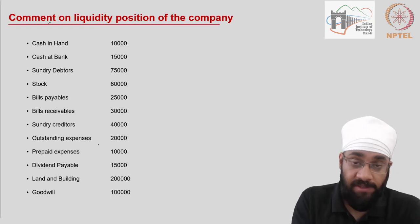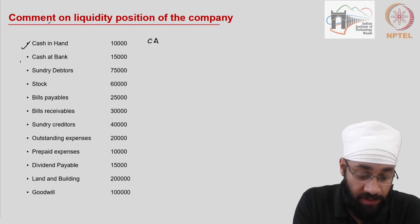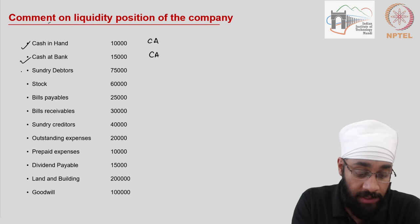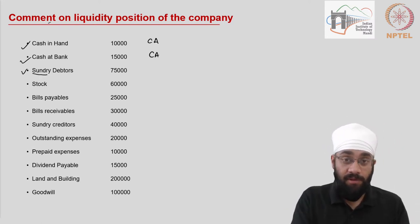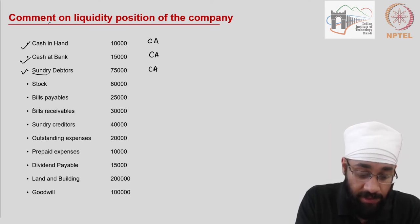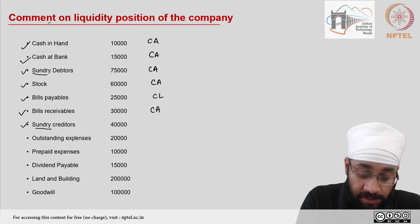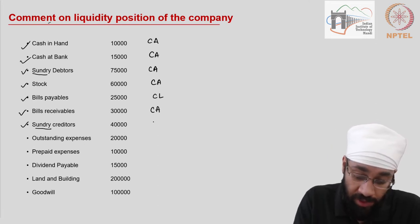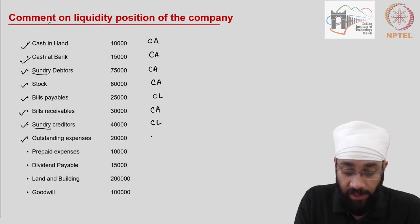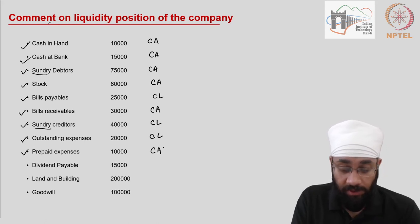Let us look at these terms. Cash in hand is a current asset. Cash in bank is also a current asset. Sundry debtors — money to be recovered — are current assets. Stock is also a current asset. Bills payable is a current liability. Bills receivables are current assets. Sundry creditors — various small vendors to whom you have to pay — are a current liability. Outstanding expenses are also a current liability. Prepaid expenses are expenses paid in advance, so they are current assets.